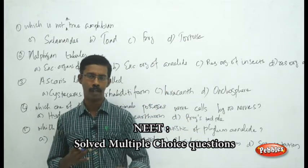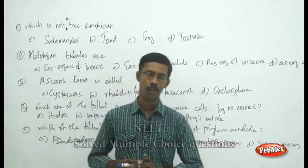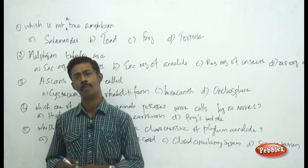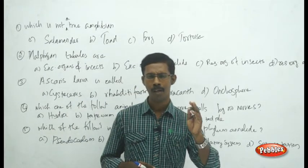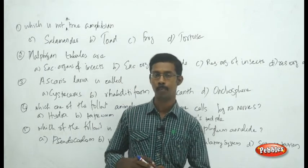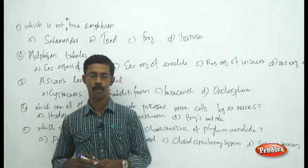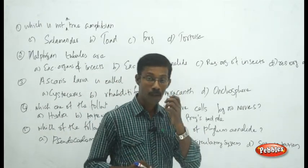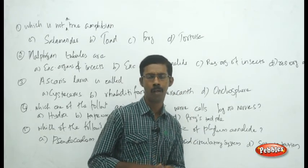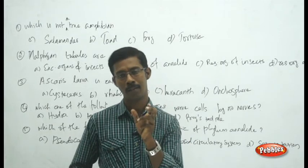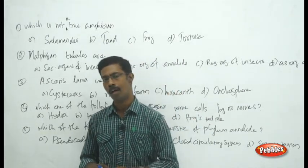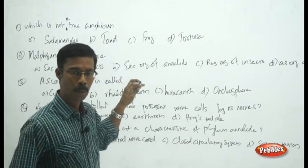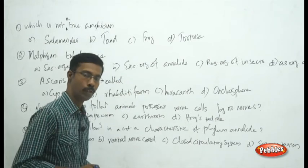We have seen so many different types of classification in the animal world. As I told you, from Porifera until Echinodermata, we have seen so many invertebrates, then something about the Hemichordata, then about the Chordata, and so many classes belonging to Chordata. You have to understand the basic characters to identify each and every category, and you should know the major examples belonging to each category.